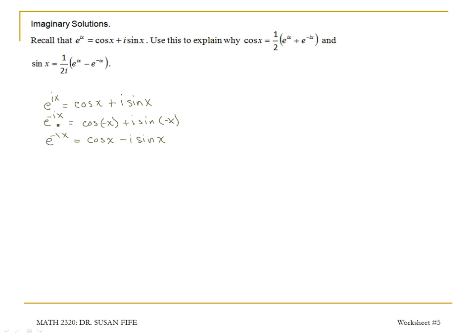So, I can rewrite this e to the negative ix, using cosine x and sine x. So, let me bring this back down here. And that's an i. e to the ix equals cosine x plus i sine x. Now, if I add these equations, I'll get e to the ix plus e to the negative ix,